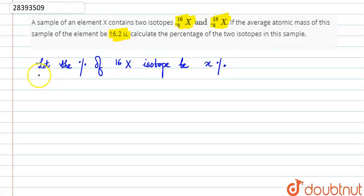And the total percentage is always 100. So if one is x, then what will the other be? Let the percentage of the 18X isotope be 100 minus x%.